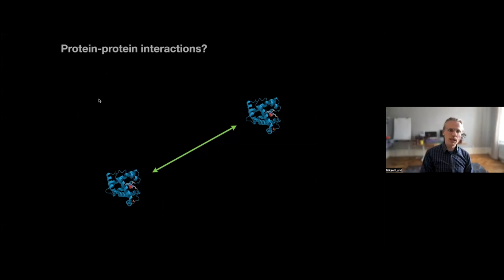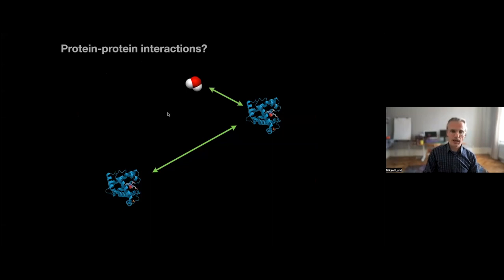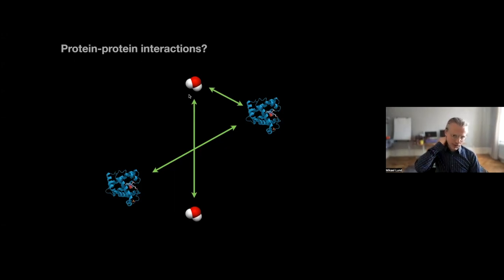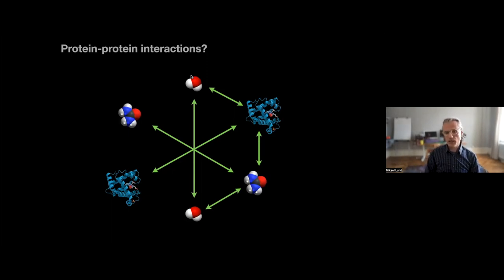When we say protein-protein interactions, what do we actually mean? We have two proteins and we're obviously interested in how they interact with each other. We have to remember it's not just proteins — around the protein we have water, so we also need to consider protein-water interactions and how water molecules interact with each other. We could also add co-solutes — small molecules or salts — and they will of course also interact with the protein, with themselves, and with the water.